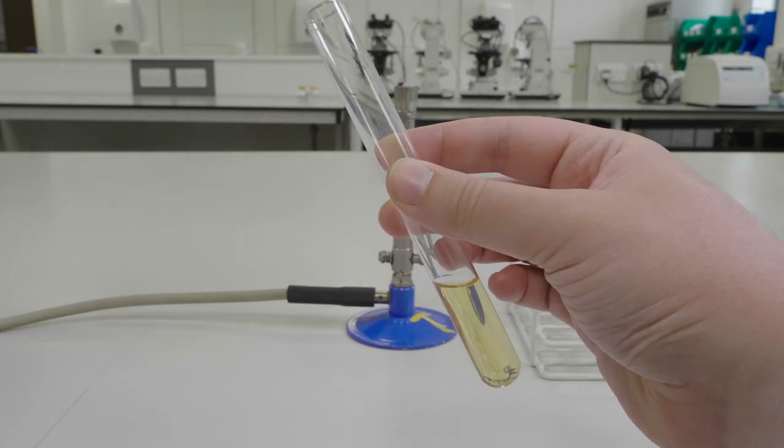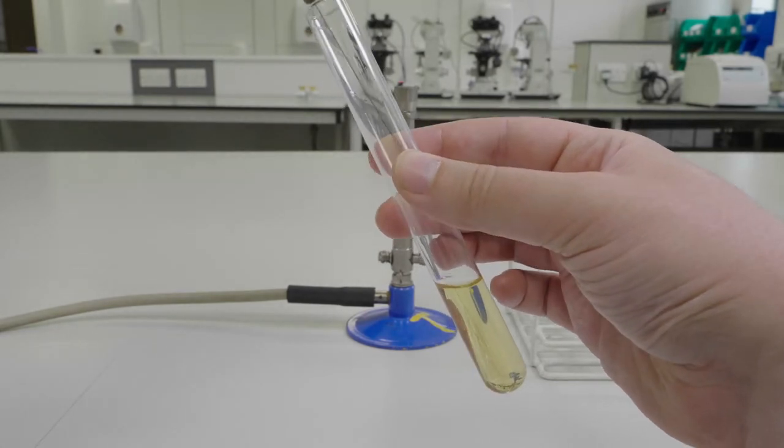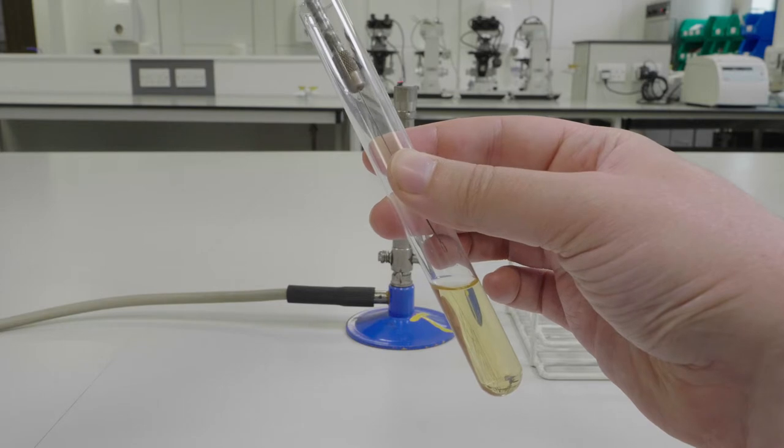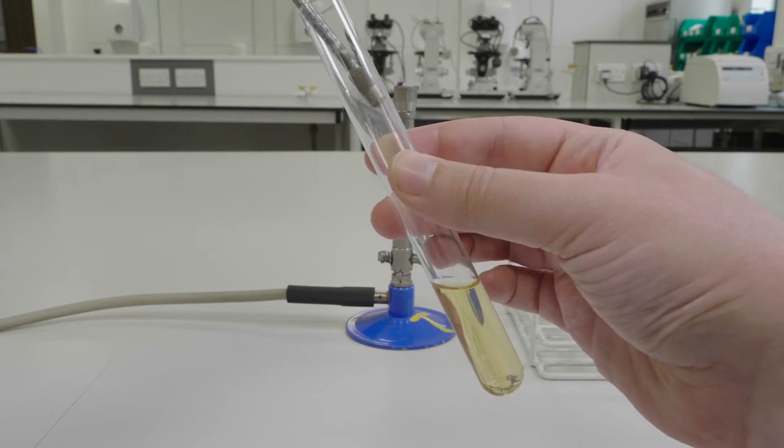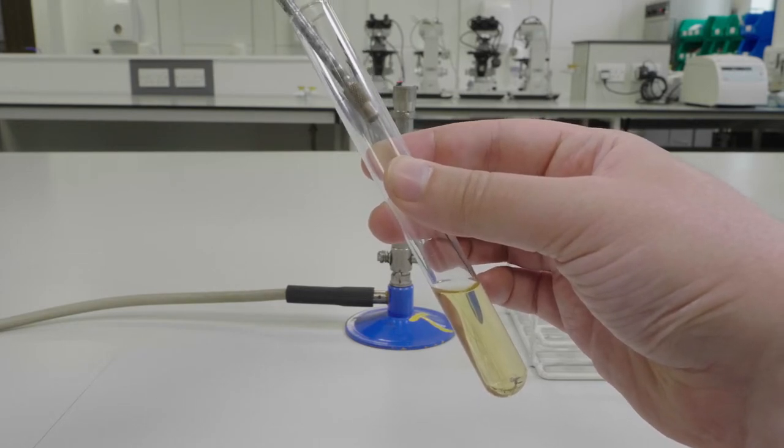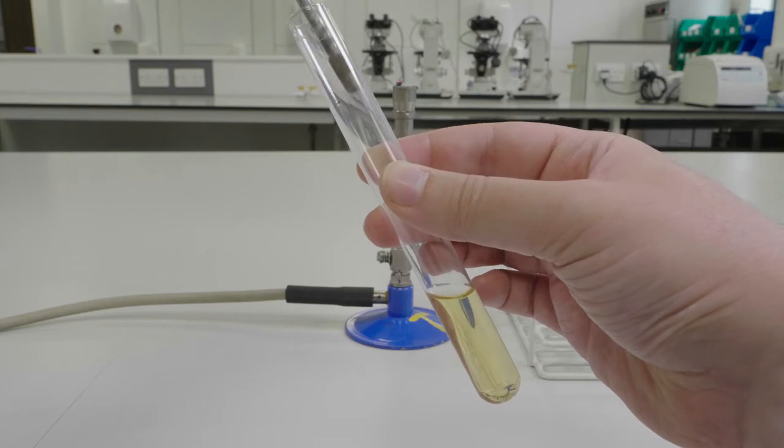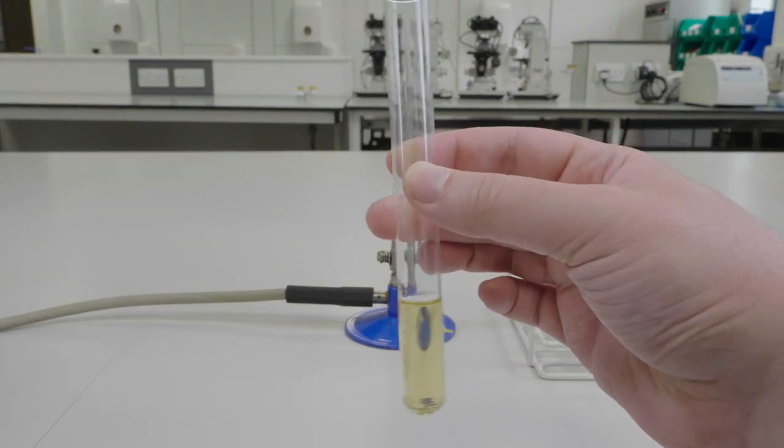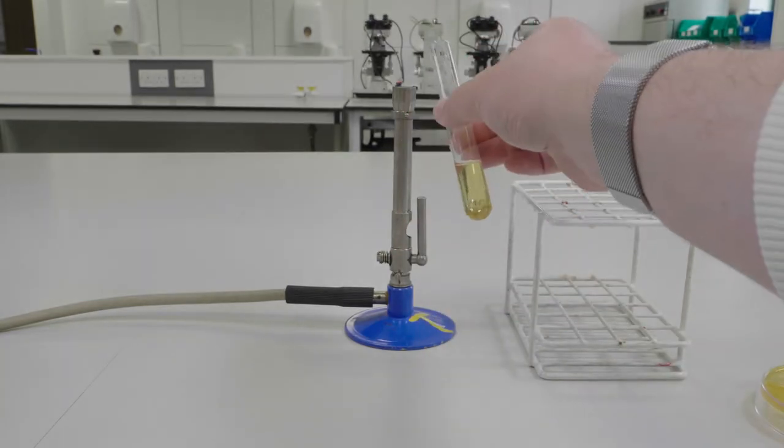Then tip the test tube to one side, hold your inoculating loop like a paintbrush, insert it into the test tube and rub your sample of bacteria against the glass of the tube. You should aim for the part of the tube which is under the level of the culture medium when the tube is returned to vertical.